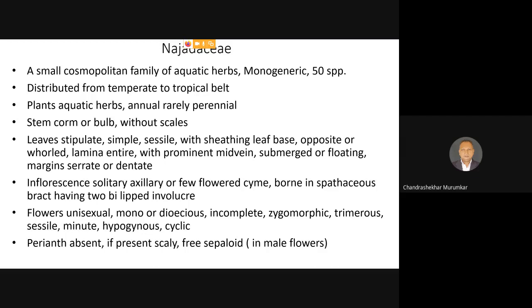Najadaceae is a cosmopolitan family with members reported from the temperate zone — beyond 45 degrees, up to the Tropic of Capricorn — to the tropical belt toward the equator. It is a monogeneric family with a single genus Najas having almost 50 species spread almost all over the world, present in colder regions, subtropical regions, and the tropical belt. The plants are aquatic herbs. Many species of Najas are herbaceous and annual — they do not have a perennial rootstock.